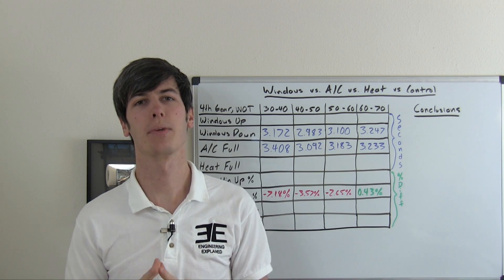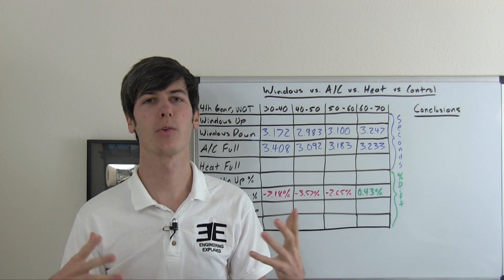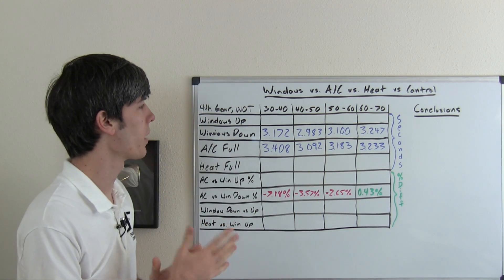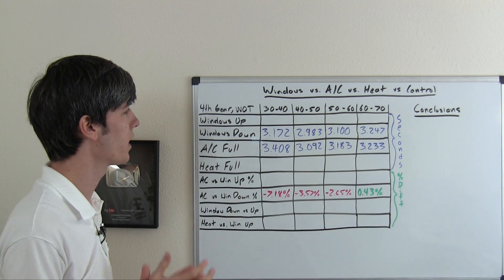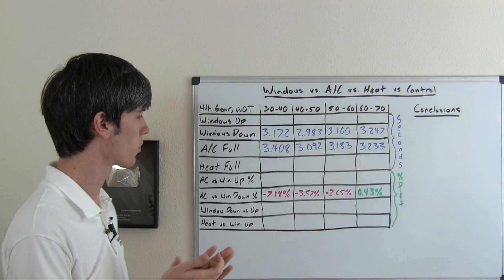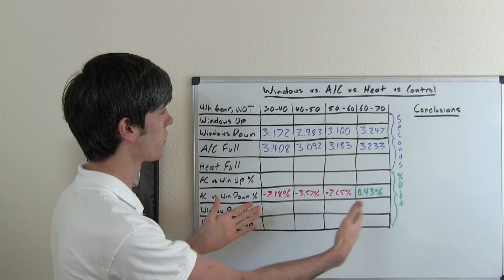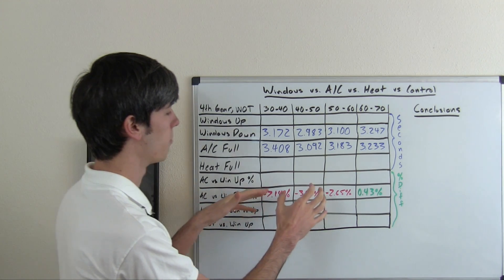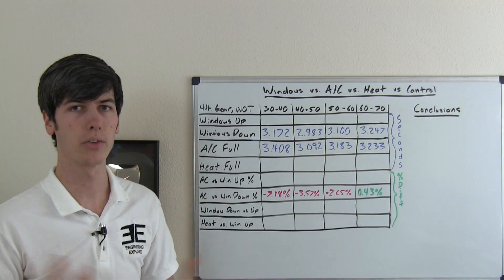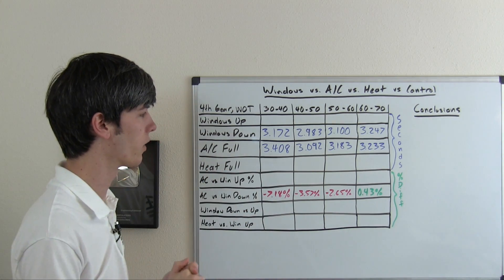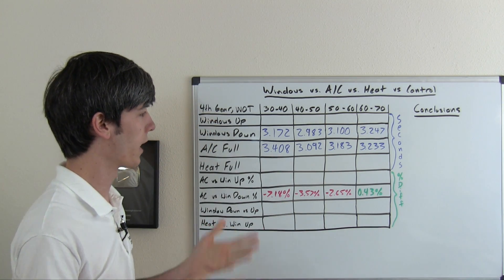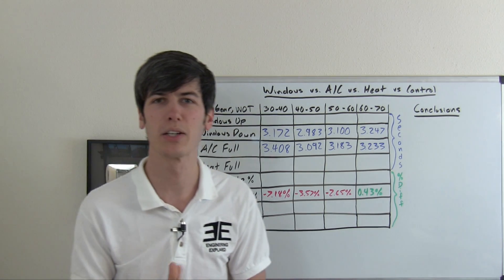Hello everyone and welcome. In this video we're going to be discussing what's more efficient: having your windows up, windows down, AC on full with your windows up, or heat on full with your windows up. I previously made a video comparing AC on full to windows down, and I basically concluded that below 60 miles per hour the AC is going to have more of a power draw, and above 60 miles per hour you're going to have a power draw from drag due to the aerodynamics of having the windows down. So basically, if you're in the city use your windows down; if you're on the highway have your windows up and turn the AC on.